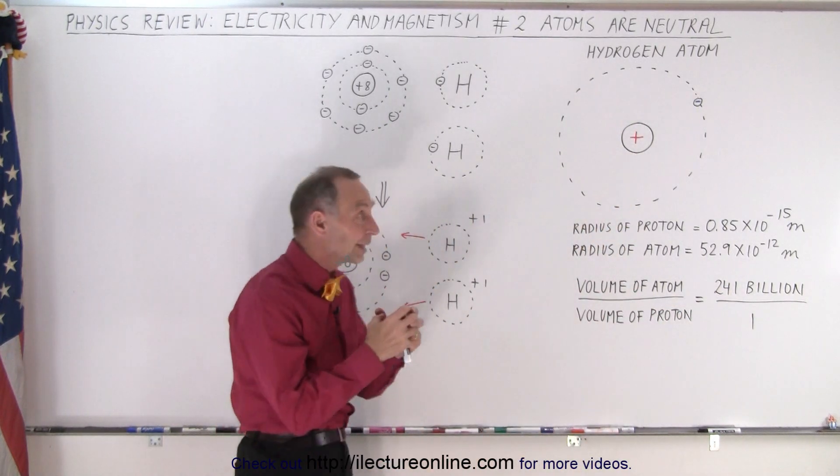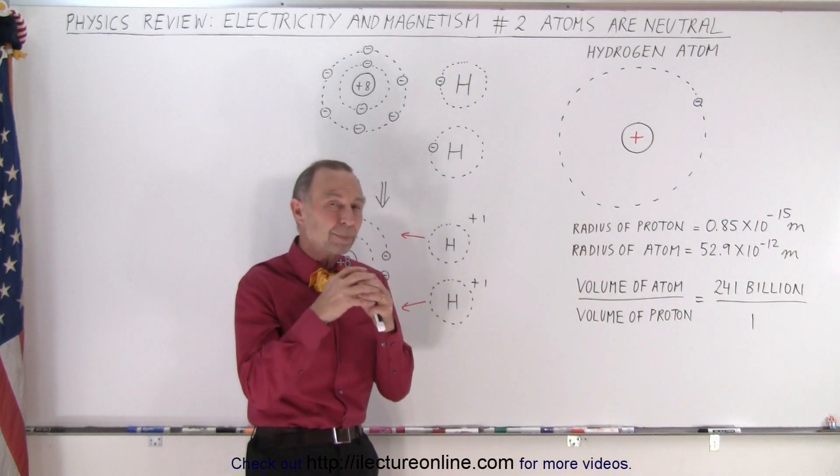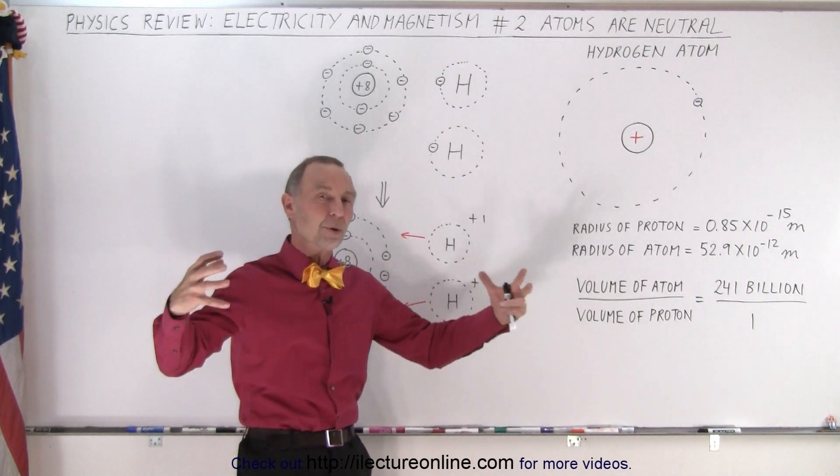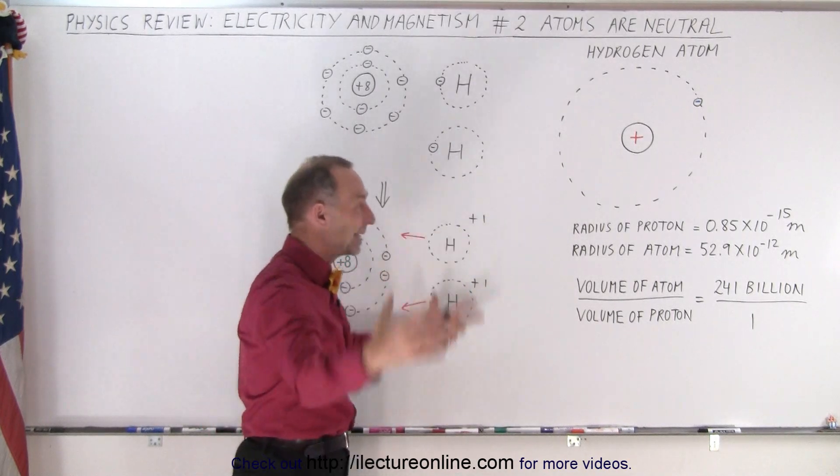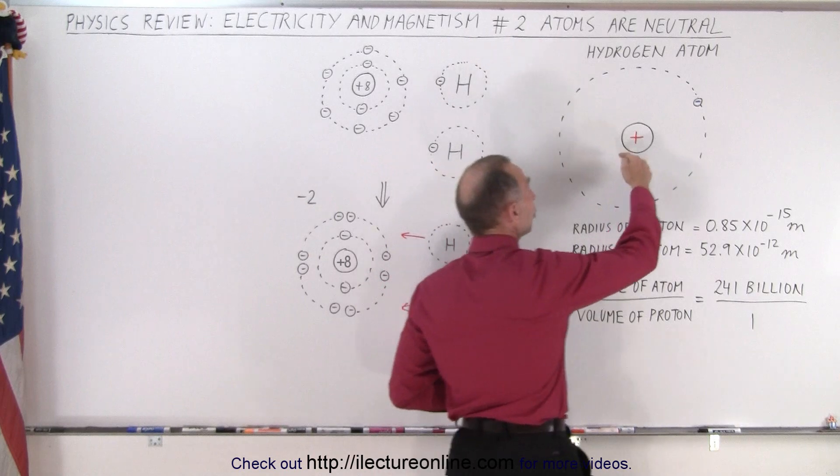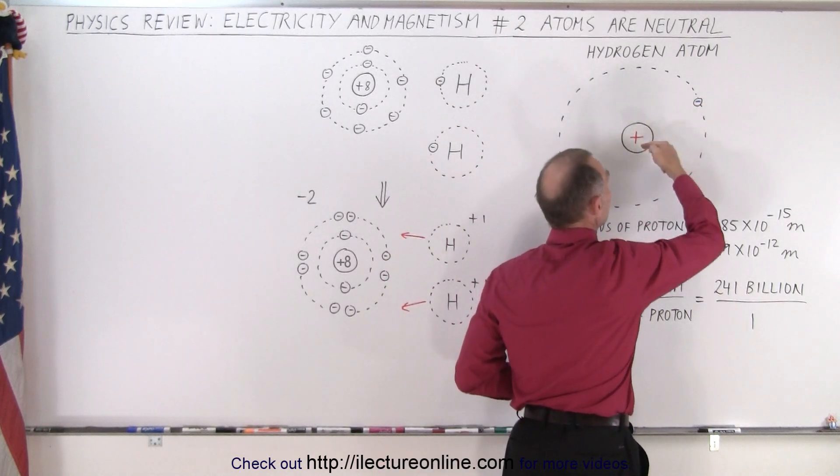The proton carries more than 99.9% of the mass of the atom, but it's the electron that shapes the volume around the nucleus forming the atom itself. And it does so by having these enormous forces of attraction between the two.